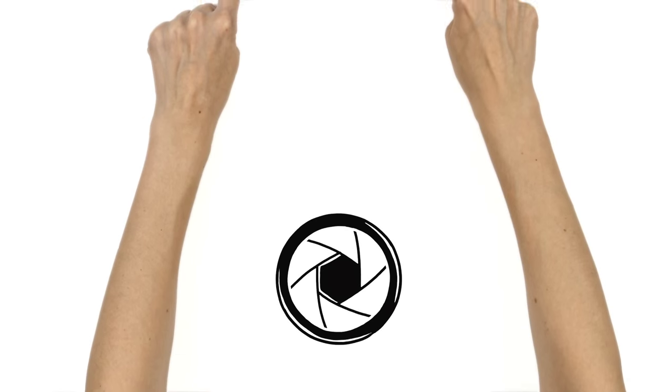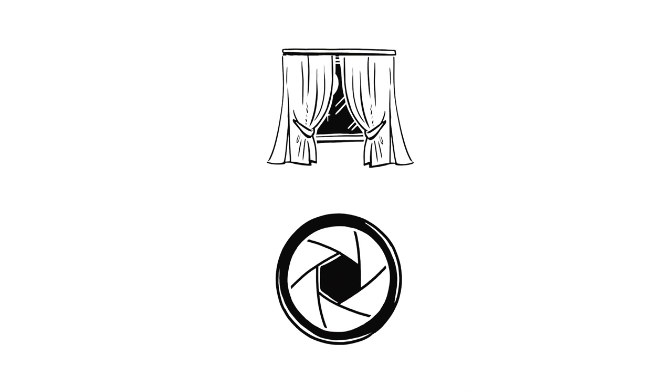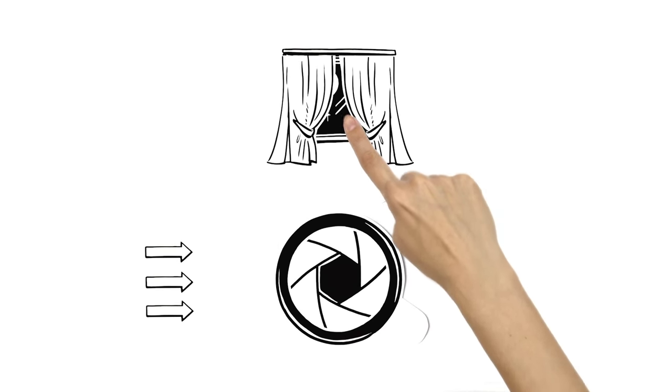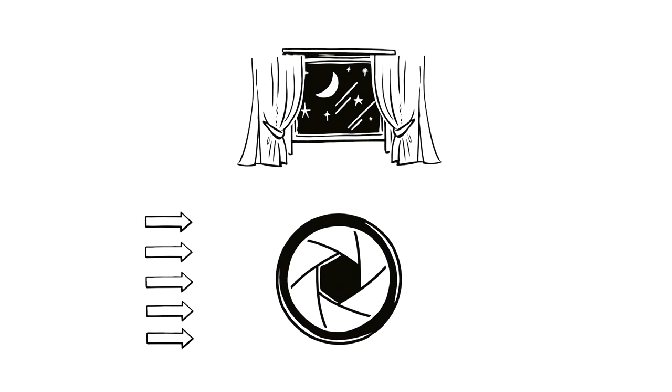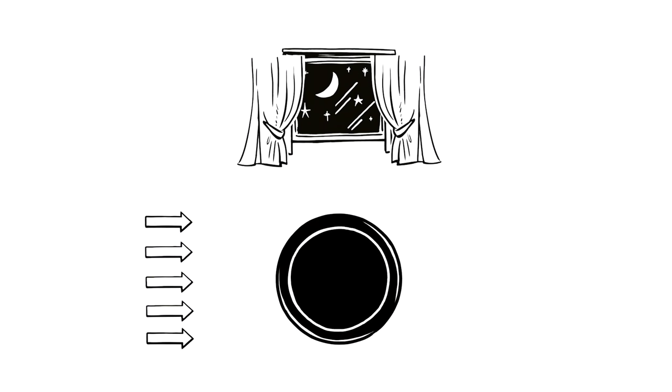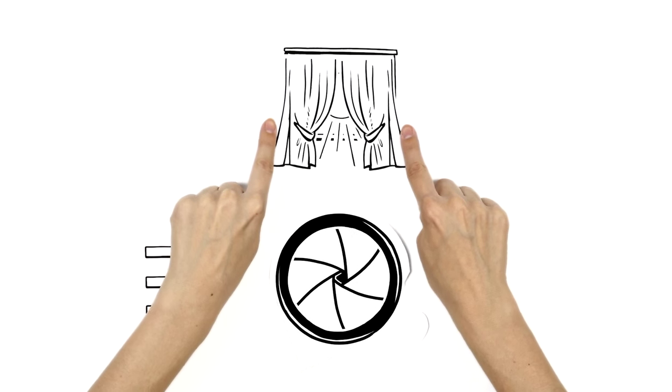Imagine the aperture as a pair of curtains. It controls the amount of light entering the lens. When it's dark, Mary wants to capture as much light as possible. To do that, she needs to open the aperture wider. If it's very bright, Mary draws the aperture curtains closer together.